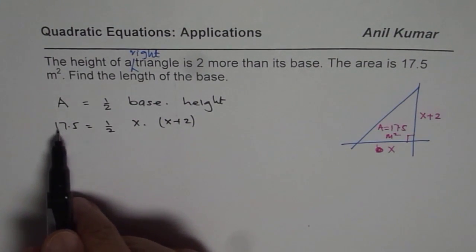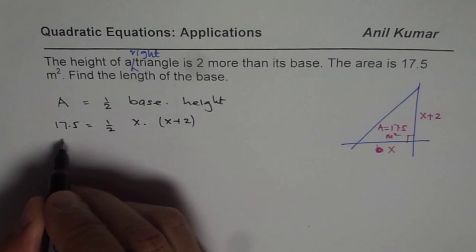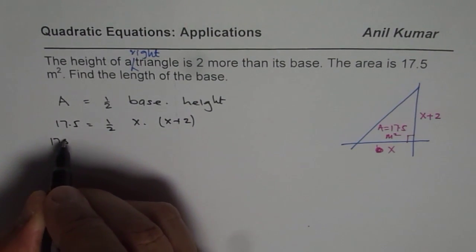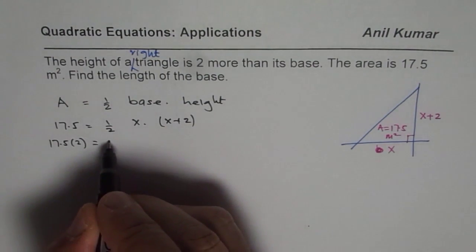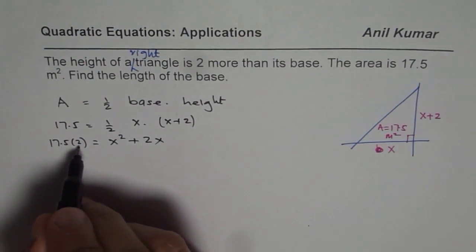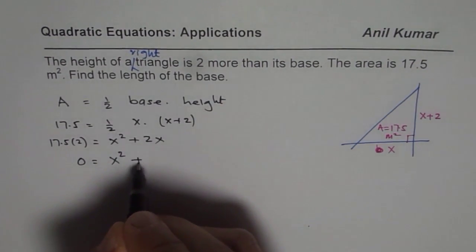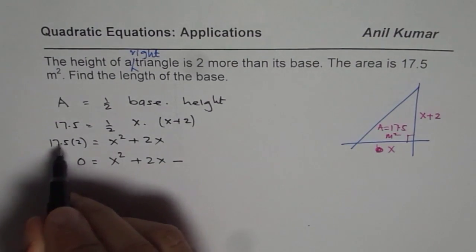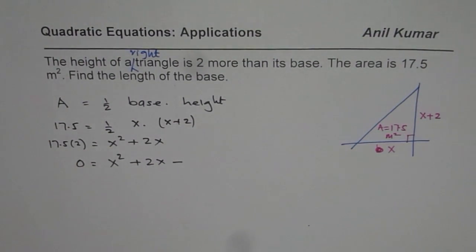Let us multiply first by 2 so that we get rid of this fraction. So we have 17.5 times 2 equals—let us expand this—x square plus 2x. We will bring all the terms to one side. So we have x square plus 2x minus 2 times 17.5 which is 35.